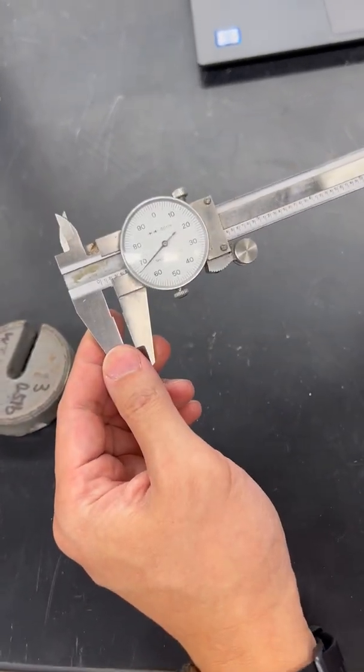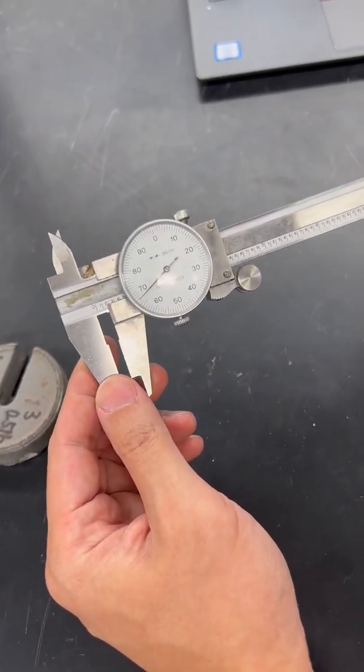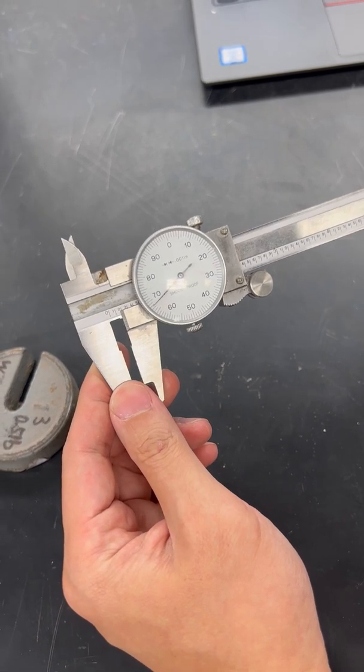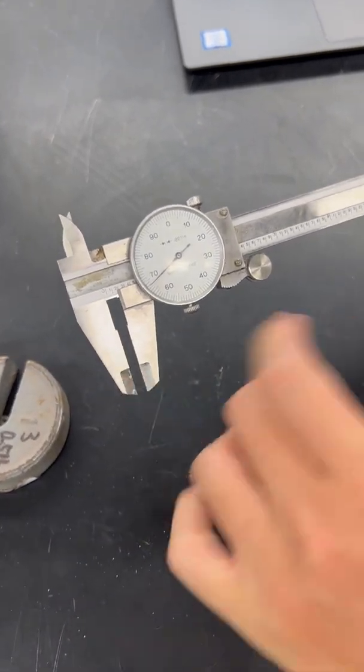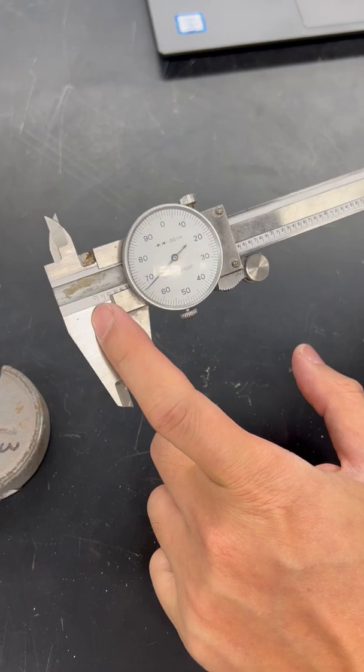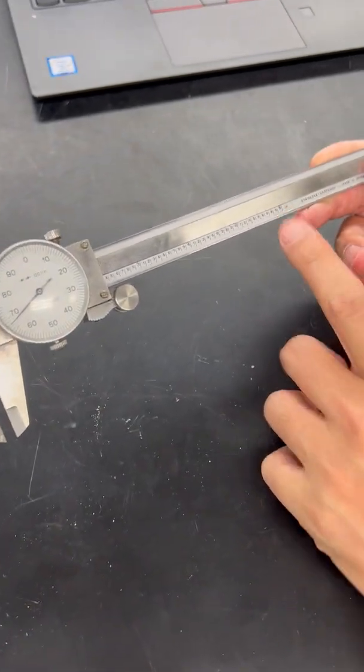Okay, so this is a caliper, and to use this caliper first we need to realize the range and the capacity of this caliper. This is from zero to six inches, so this is a six-inch capacity caliper.